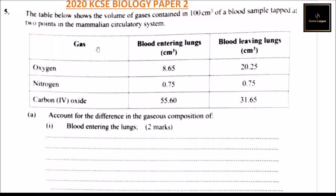Question number five. We are told the table shows the volume of gases contained in 100 cm³ of a blood sample tapped at two points on the mammalian circulatory system.